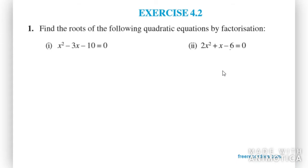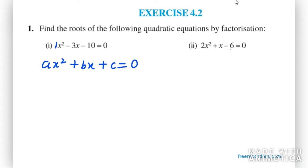Let's start with question number one of exercise 4.2. It says find the roots of the following quadratic equations by factorization. The general equation for a quadratic equation is ax² + bx + c = 0. We have to take a and c and multiply them. In this case, a is 1 and c is 10, so the product of a and c is 10.